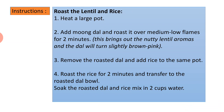Instructions — roast the lentil and rice: heat a large pot, add mug dal and roast over medium-low flame for two minutes. This brings out the nutty lentil aromas and the dal will turn slightly brown-pink. Remove the roasted dal, add rice to the same pot, roast for two minutes, and transfer to the roasted dal bowl.